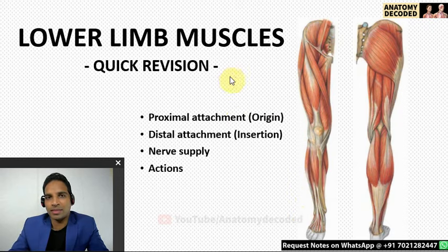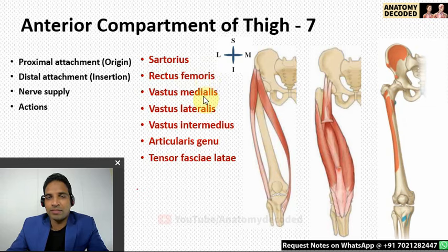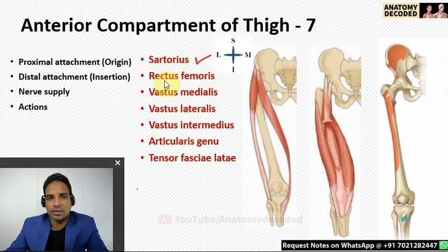Except for the muscles of the foot, in which we will discuss only the location and nerve supply of the muscles. Let's start with the muscles of the anterior compartment of the thigh. Here is the list of muscles of the anterior compartment of the thigh, and we'll discuss each muscle one by one. The first muscle listed is sartorius.